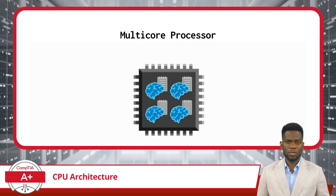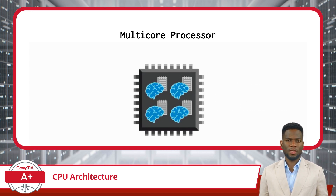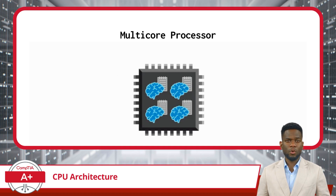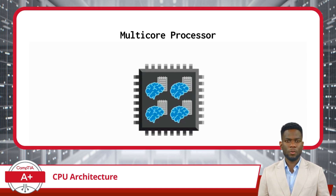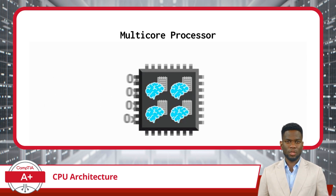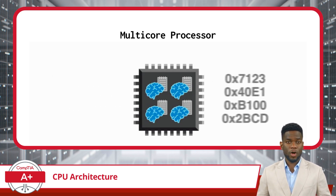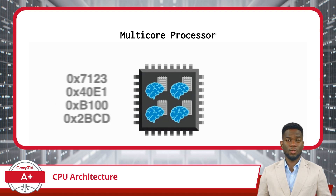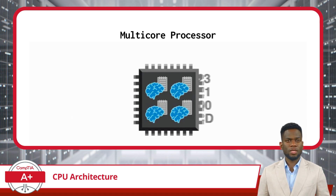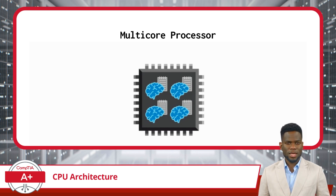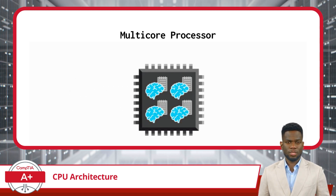Now, let's turn our attention to multi-core processors. Unlike their single-core counterparts, multi-core processors incorporate multiple processing cores onto a single chip. These cores function independently of one another, enabling the processor to execute multiple tasks simultaneously. This parallel processing capability significantly enhances overall system performance and multitasking capabilities. By leveraging multiple cores, multi-core processors can distribute computing workloads more efficiently, resulting in faster task execution and improved responsiveness — whether running demanding applications, handling numerous background processes, or multitasking between various tasks.